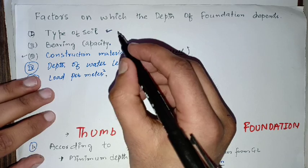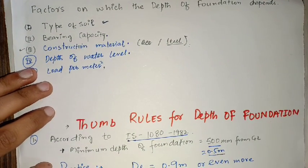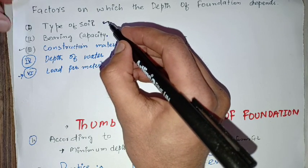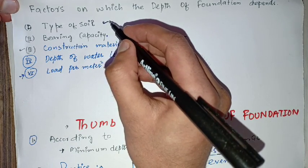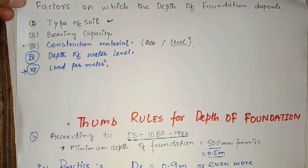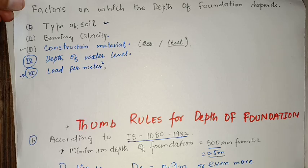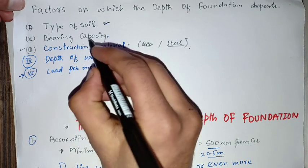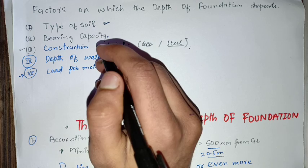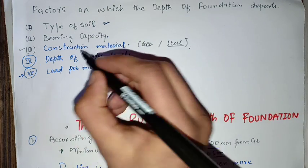The next point covers the factors on which depth of foundation depends. The first factor is the type of soil — the type of soil present in the area determines the depth of foundation to be provided. The second factor is bearing capacity — what is the bearing capacity of the soil in the area where the foundation is to be constructed.